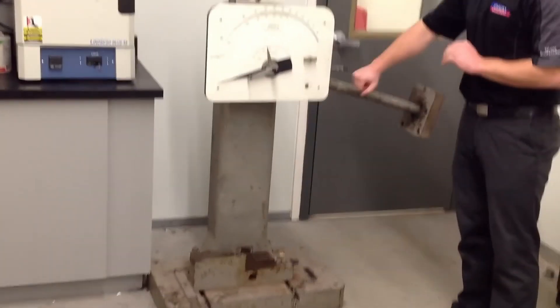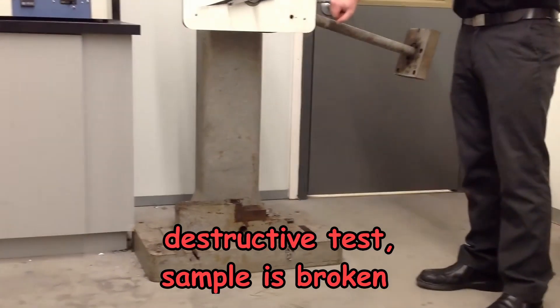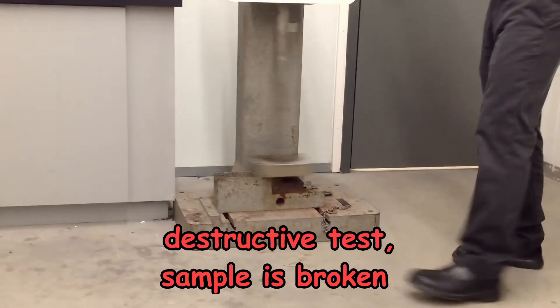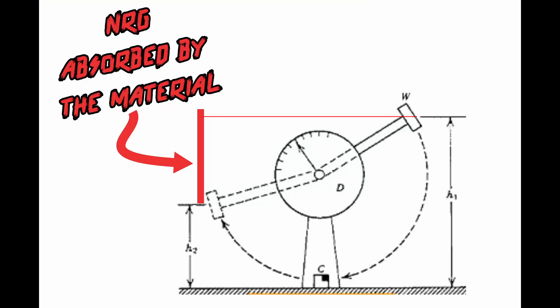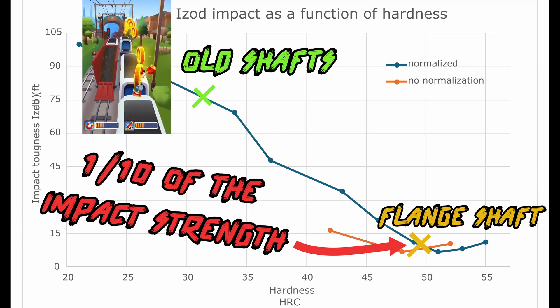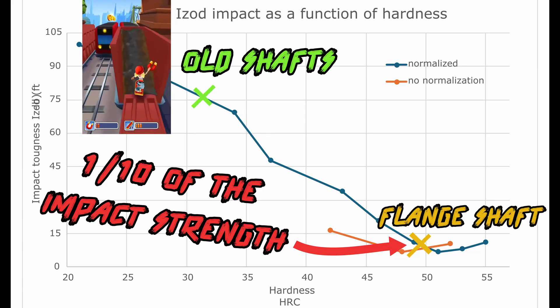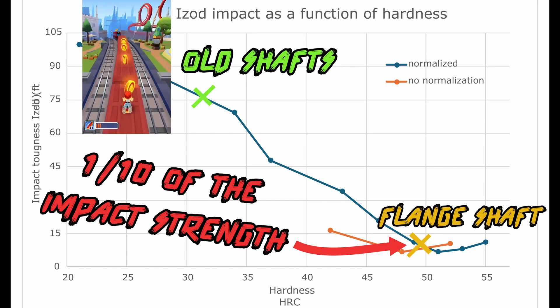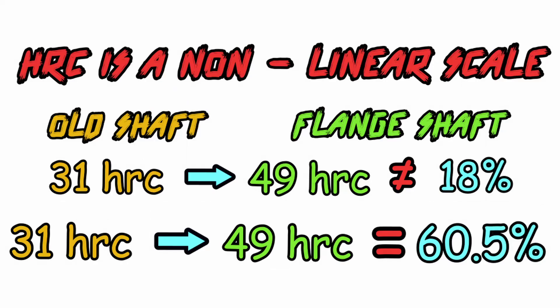Izod impact strength is a destructive test where a sample is broken with a raised hammer. The difference between the height of the hammer is the energy that's absorbed by the material during breaking. So how did the impact strength compare between the old shaft versus the flan shaft? Well, it wasn't good. It was one-tenth of the impact strength at 49 HRC. It's important to note here that HRC is a nonlinear scale. So the flan shaft being 49 is not an 18% difference - it's a 60% difference in hardness.